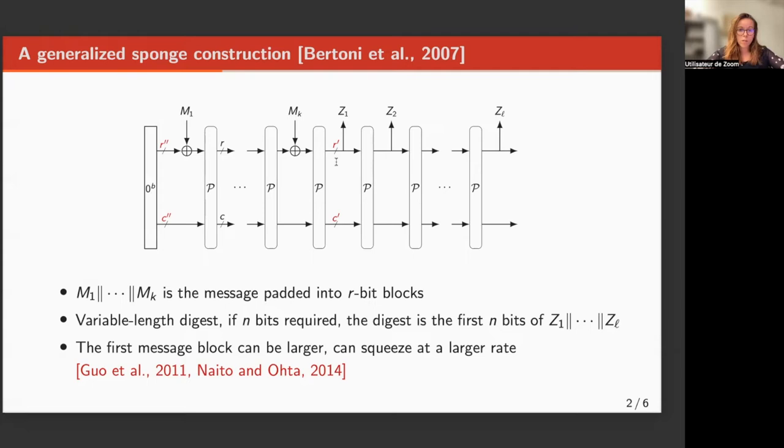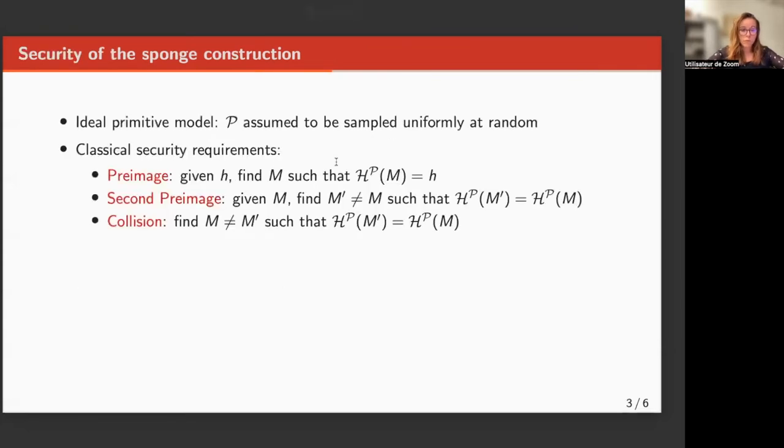Now we are interested by the provable security guarantees of the sponge. To do that, we place ourselves in the ideal primitive model, meaning that the permutation is assumed to be sampled uniformly at random. In order to argue that we have a good hash function, there are three classical security requirements.